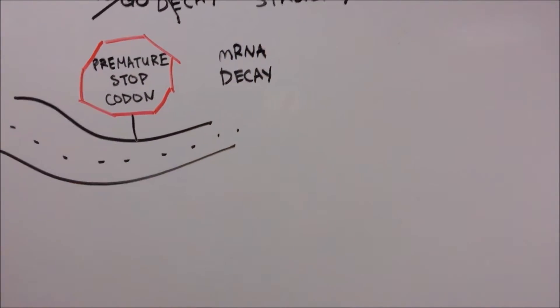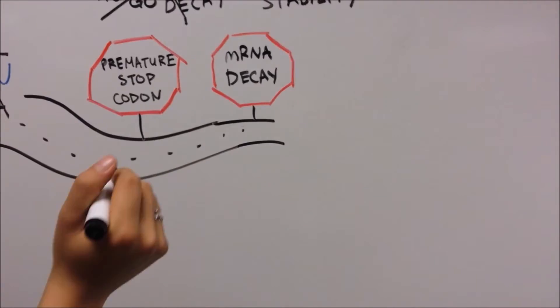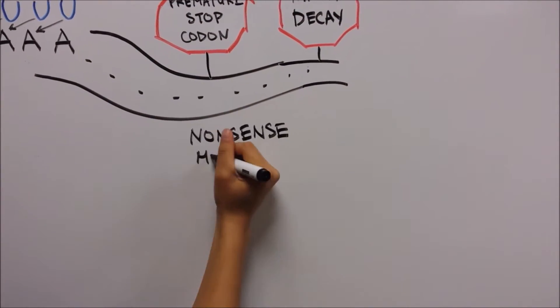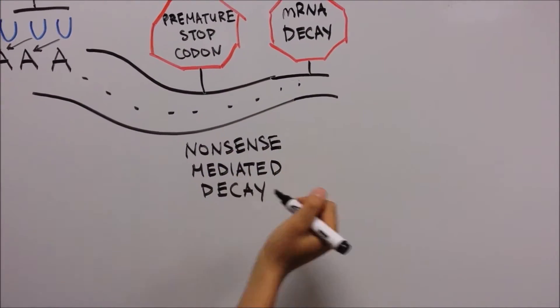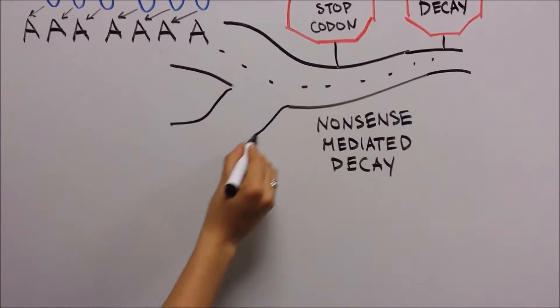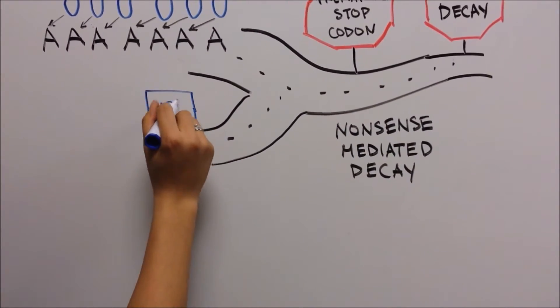This is very similar to examples of programmed minus-1 ribosomal frameshifting occurring in cellular mRNAs, which also leads to mRNA degradation by nonsense-mediated mRNA decay.